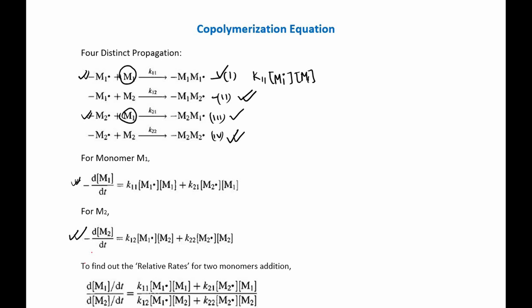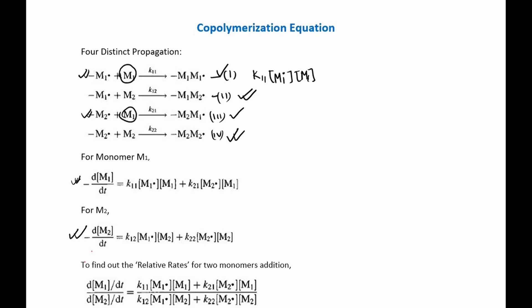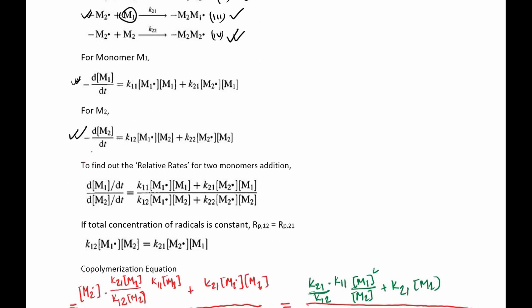If we want to find out the relative rate for two monomers addition, all we have to do is find the ratio of these two different concentrations — that means the rate of change of concentration of monomer 1 and monomer 2 — and we get this equation here.